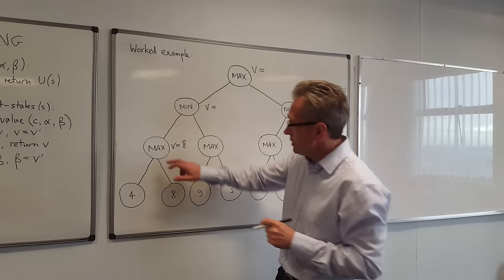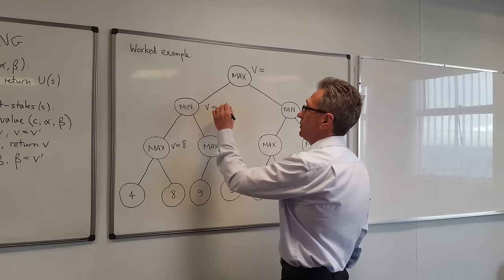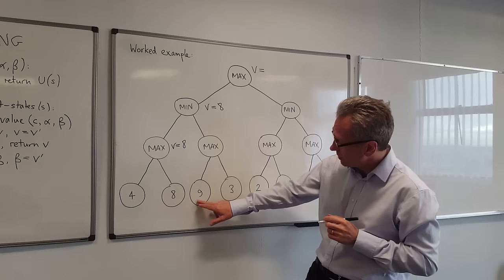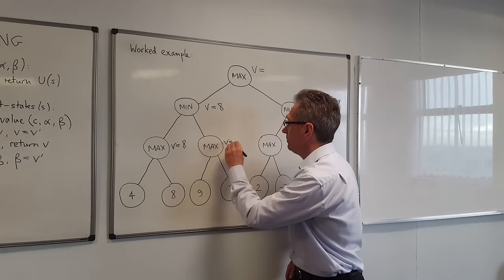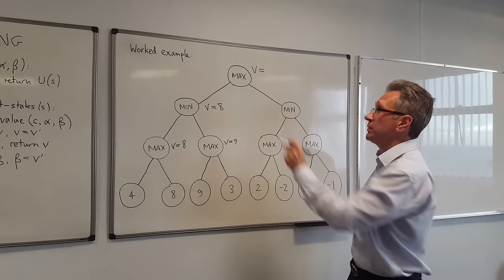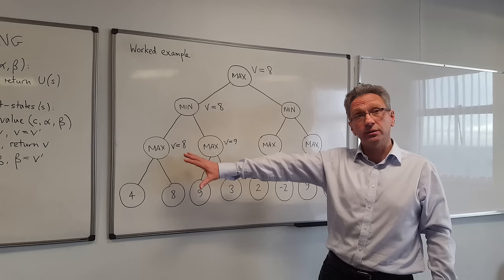This value now gets returned to this node, so we can update the value — this is now 8 — and we now call MaxValue on this node here. Max is called on this node; it's the maximum of these two values, which is 9, so the value here is 9. That then gets returned to this MinValue, but it doesn't update the value here — the value is 8. That then gets returned to the top level, so at the moment this MaxNode has a value of 8, based on that side of the tree, but we've also got to explore the other side.